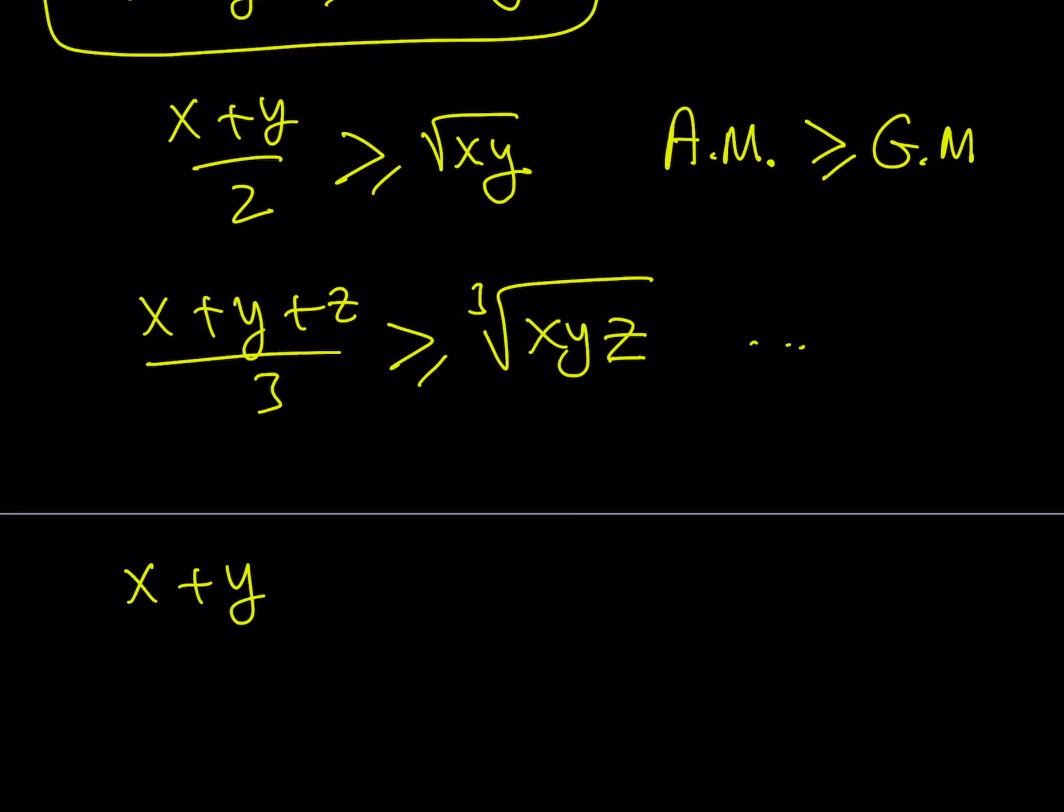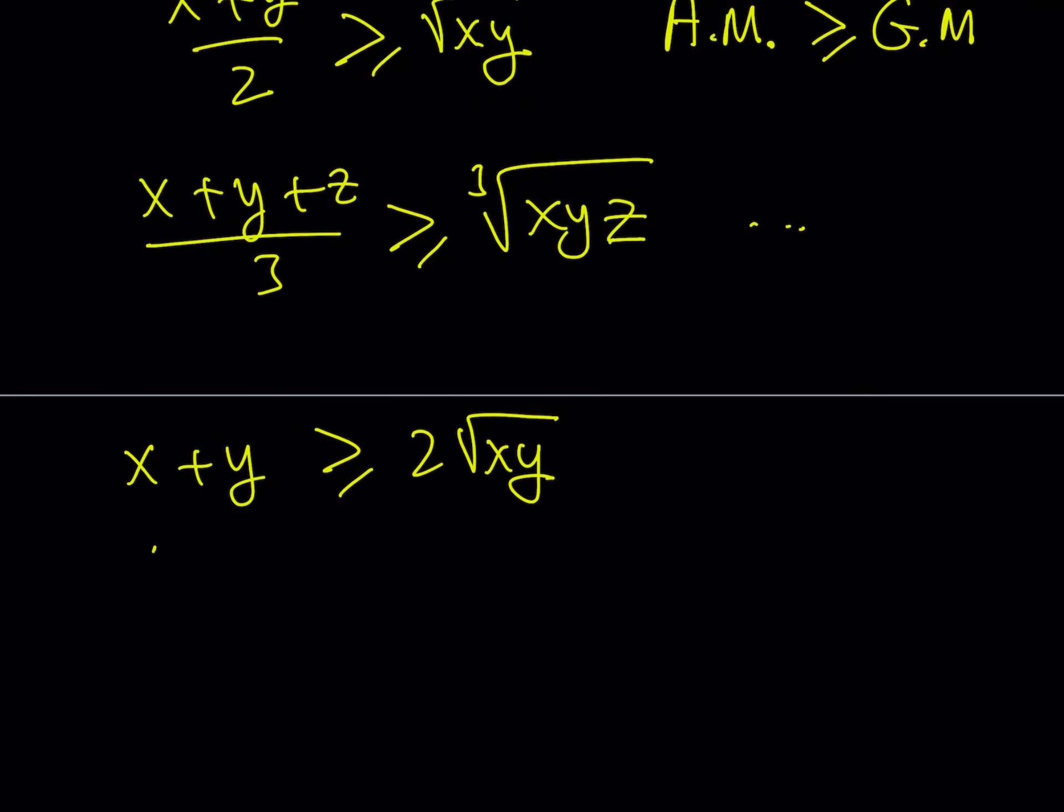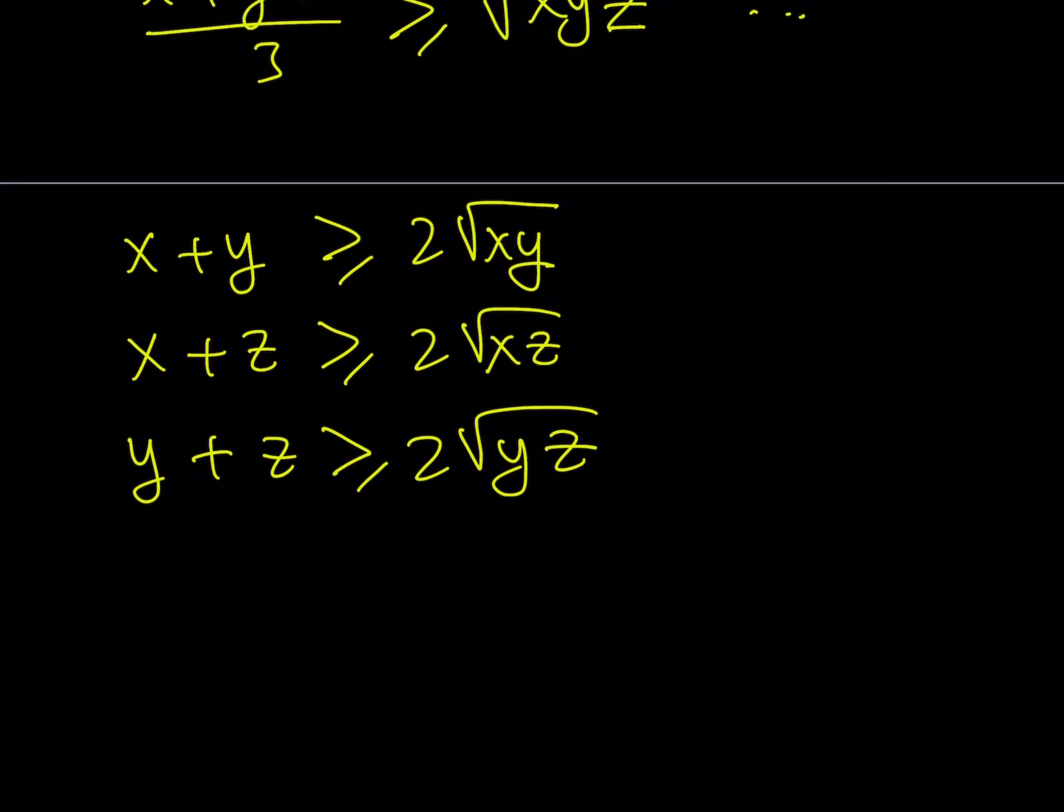So I do know that x plus y is greater than or equal to 2 times the square root of xy if x and y are non-negative real numbers. And of course I can do the same thing with x and z, and then y and z. Pretty much we can repeat this over and over.